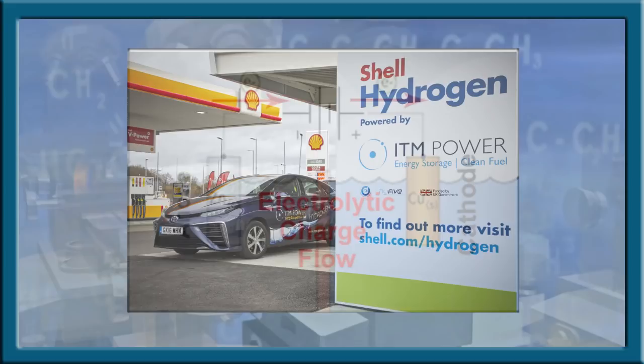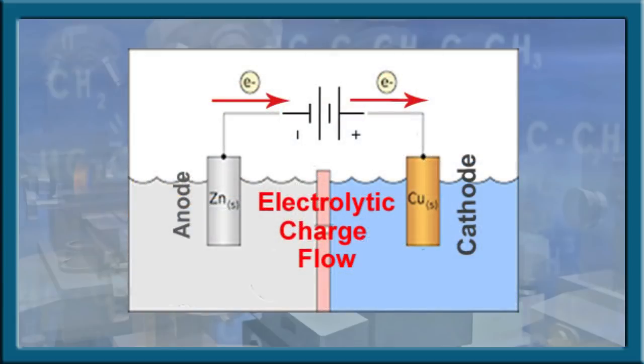Conventional electrolysis is a process of passing electricity through water, causing the hydrogen atoms to separate from the oxygen atom. Basically, electricity here is the key factor to produce hydrogen energy. So where does that electricity come from?